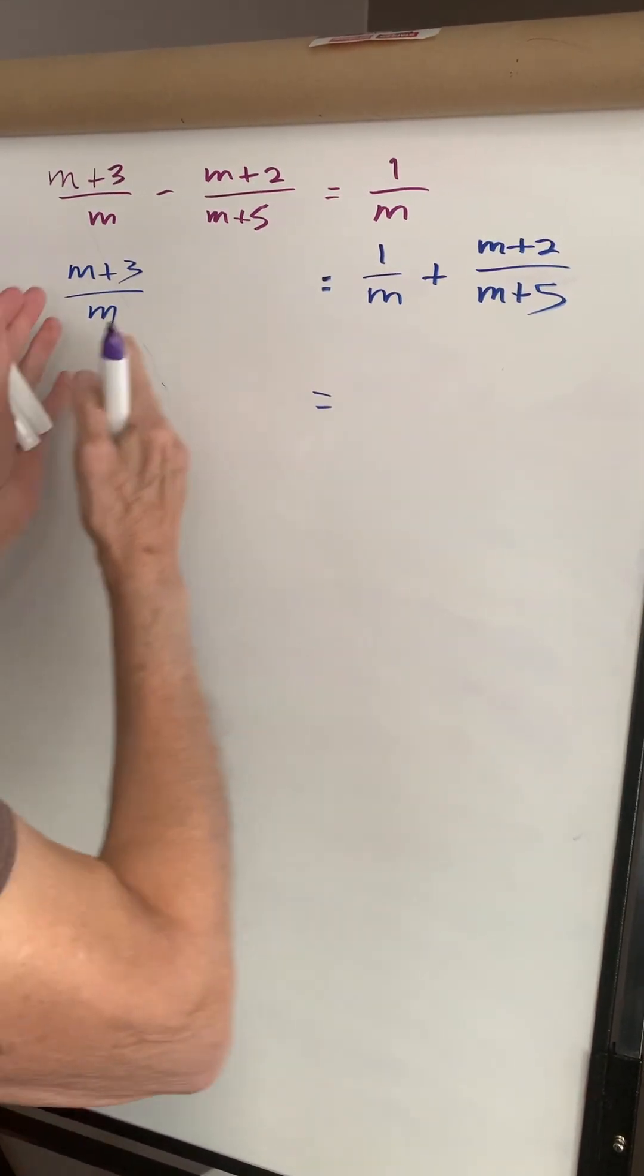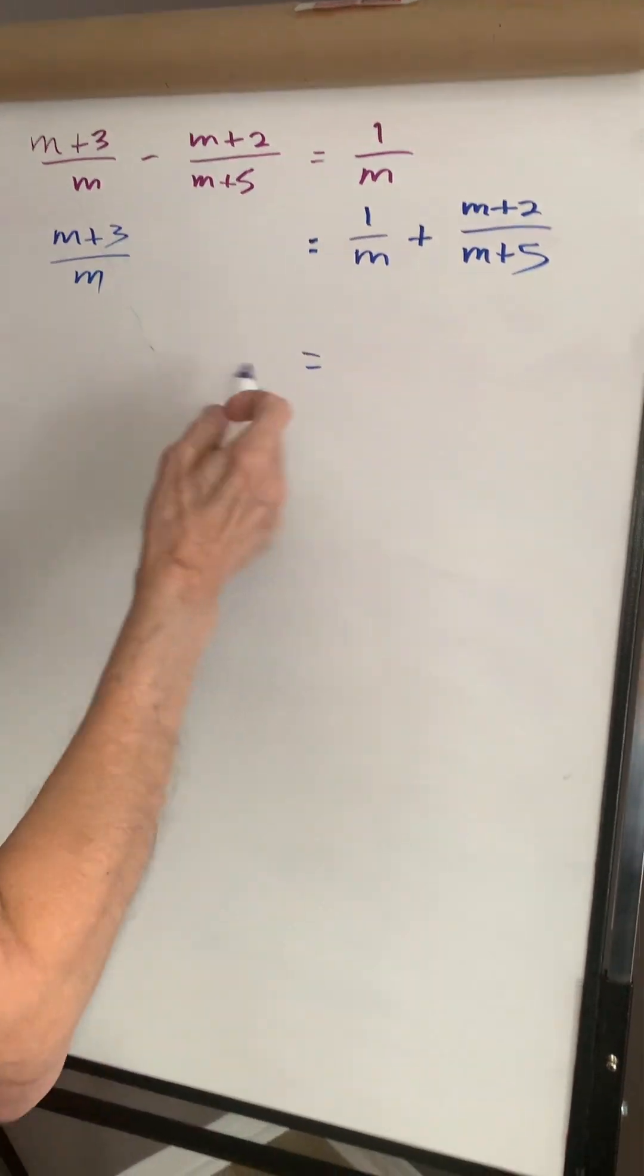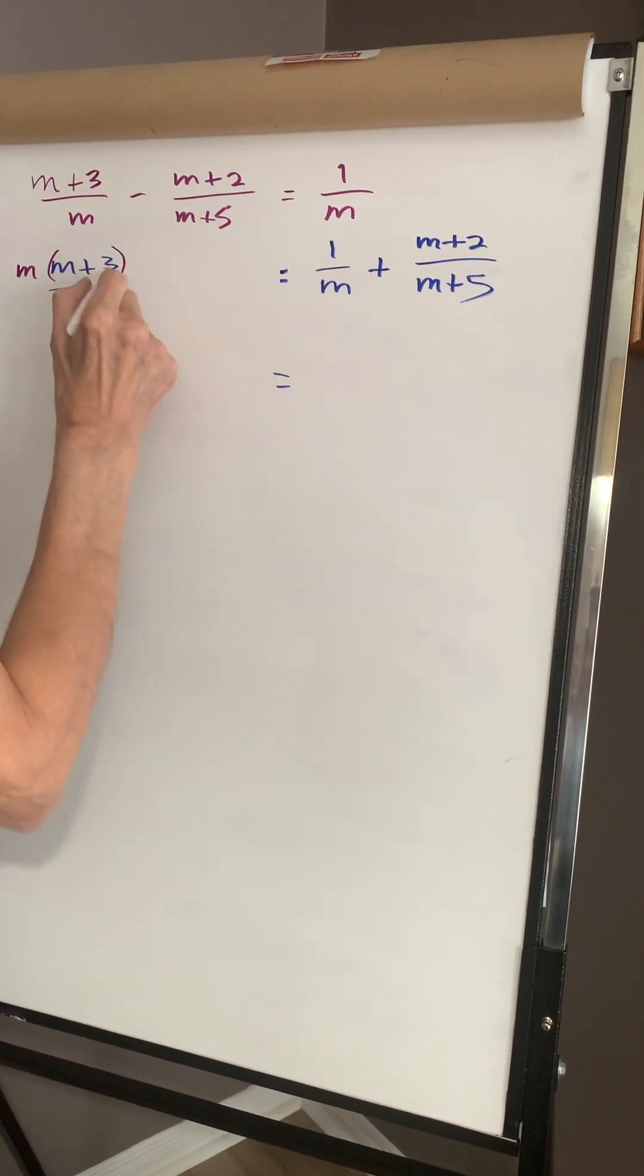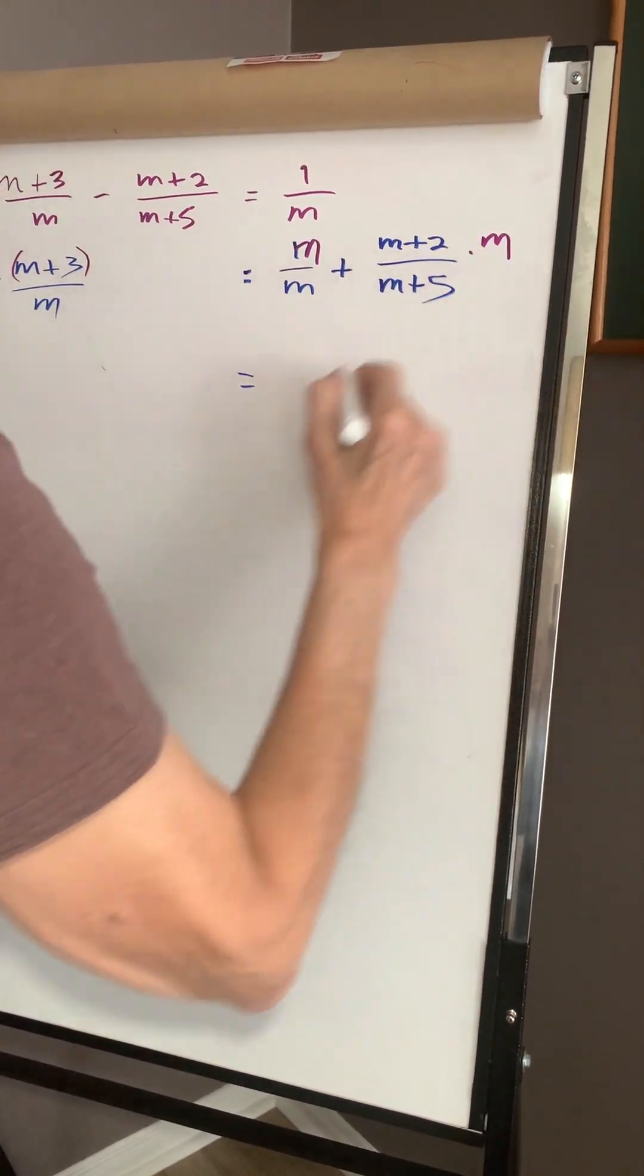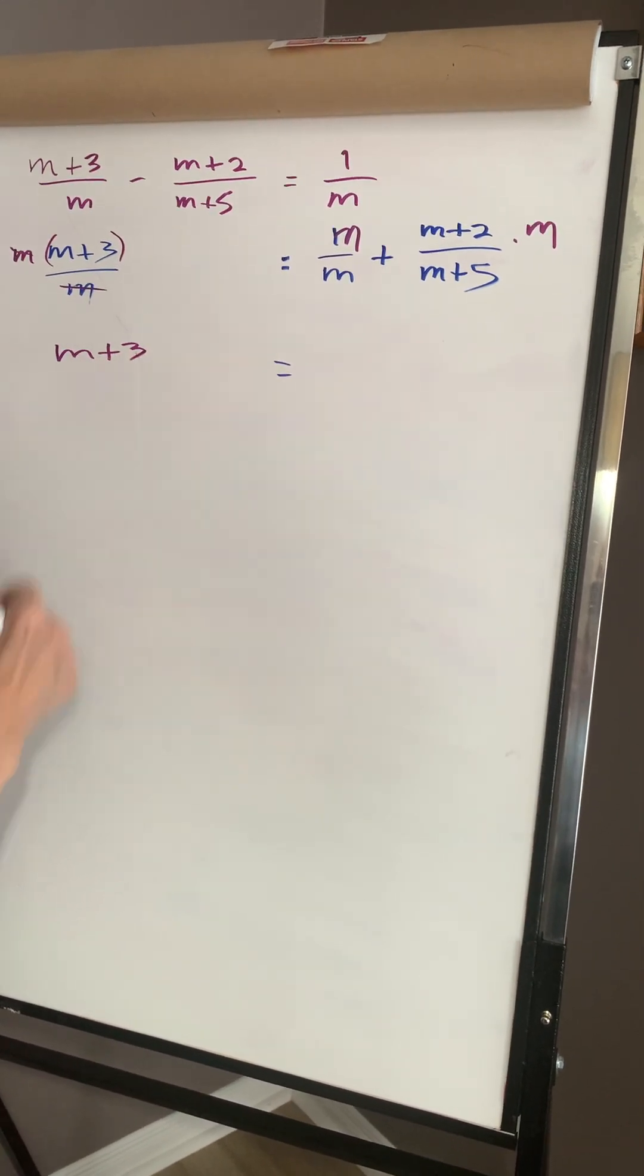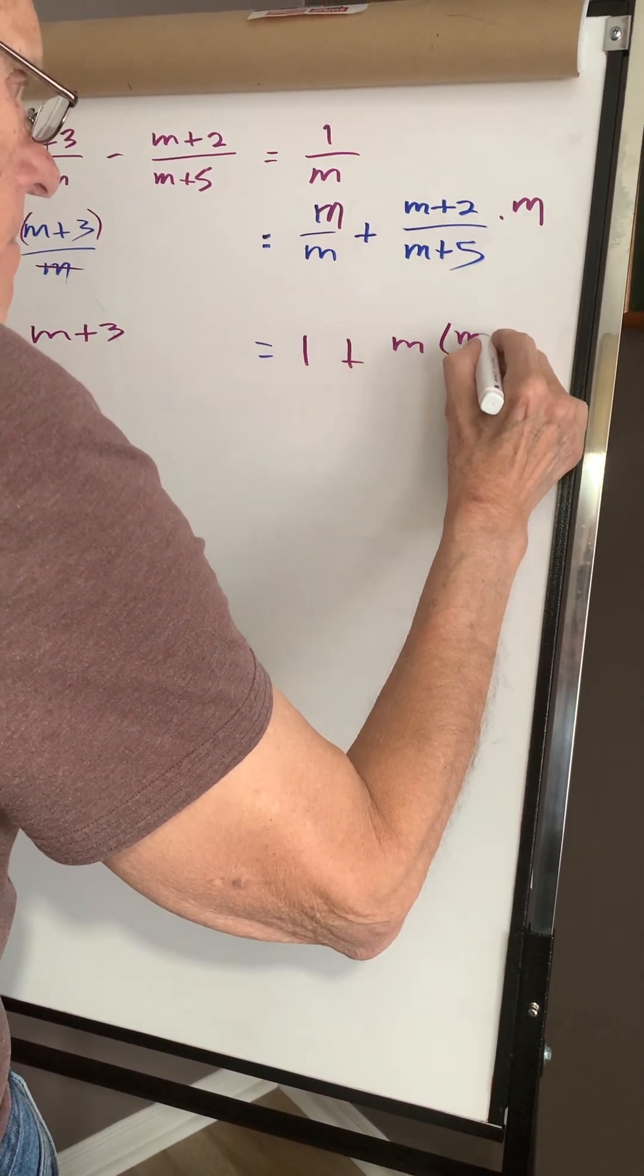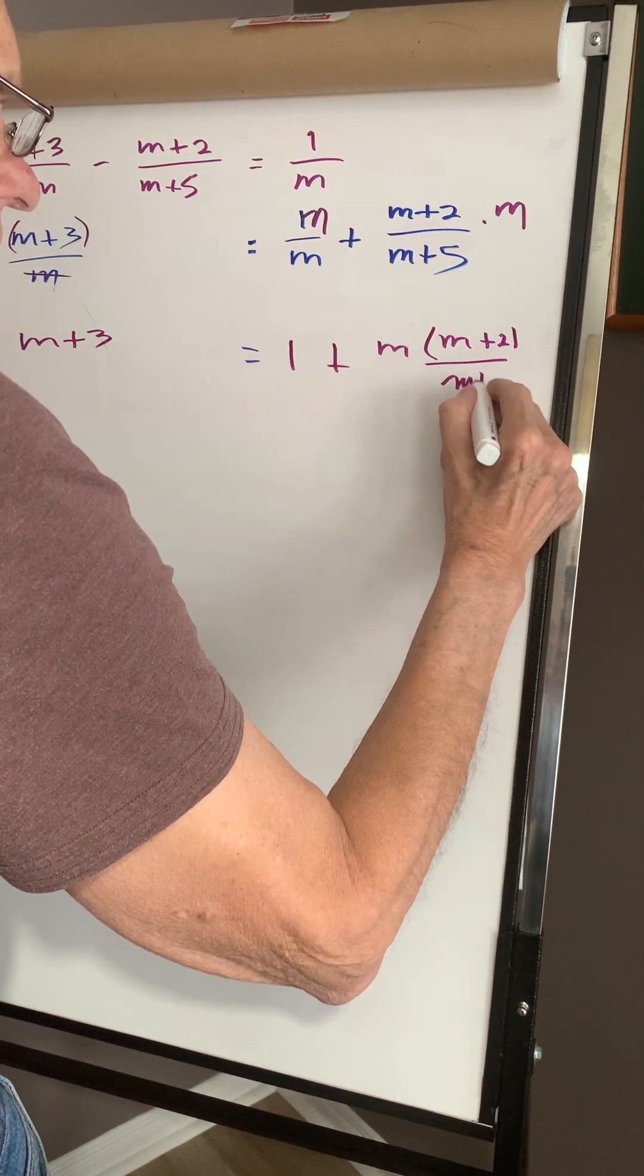Now we're going to get rid of the m, so I'm going to multiply each term by m times m times m times m. This cancels and I'm left with m plus three. M over m is one, plus m times m plus two over m plus five.